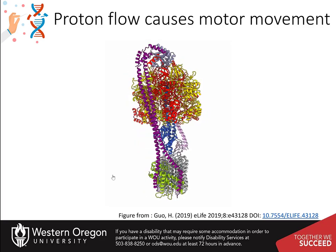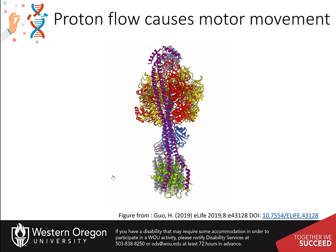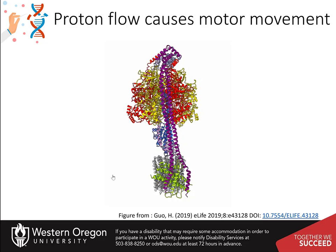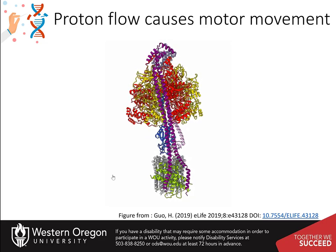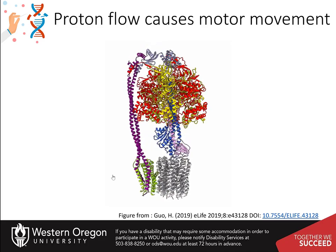This allows the beta subunits to move through the different conformational states: first as beta-E, or empty, where ADP and inorganic phosphate are recruited to the subunit. This transitions to the beta-DP state, where the ADP and inorganic phosphate are locked into the structure and cannot be removed. Further rotation of the axle causes the beta subunit to shift into the beta-TP state, mediating catalytic activity to form ATP. The ATP is then released from the molecule as it transitions from the beta-TP state back into the beta-E state.